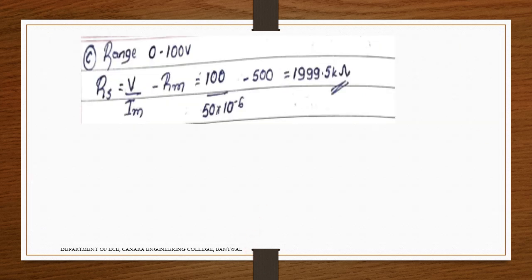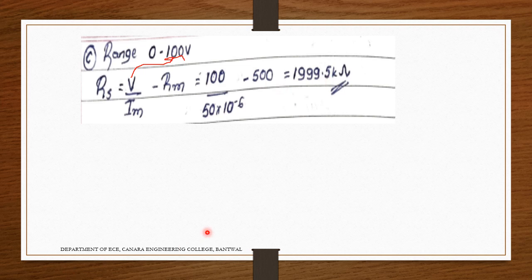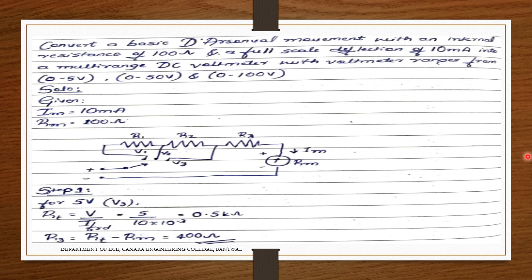For range 0–100 V: R_s3 = V/I_m minus R_m = 100 / (50 µA) minus 500 = 2,000,000 minus 500 = 1,999,500 Ω ≈ 1999.5 kΩ (approximately 1319.5 kΩ as calculated). This is how we calculate multiplier resistors for a multi-range voltmeter.